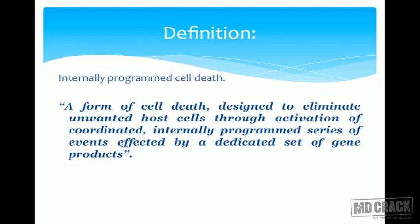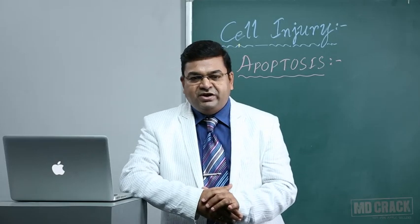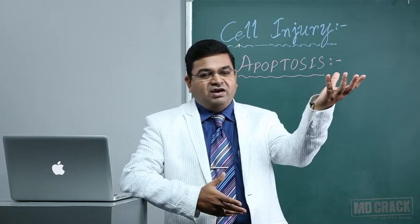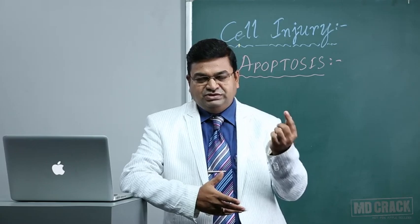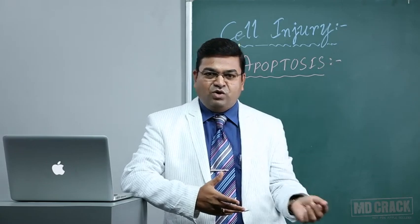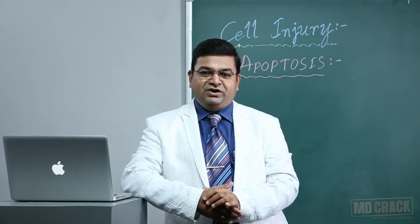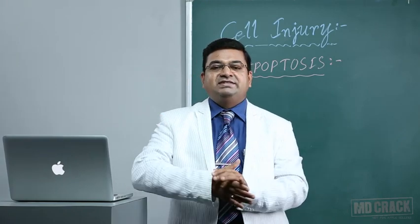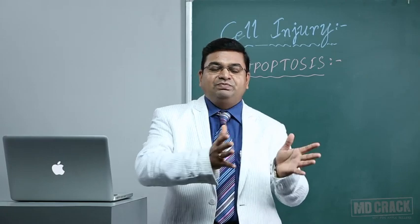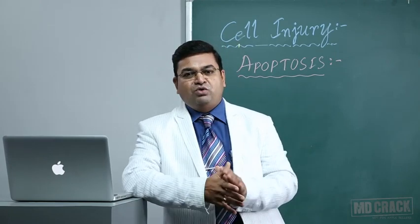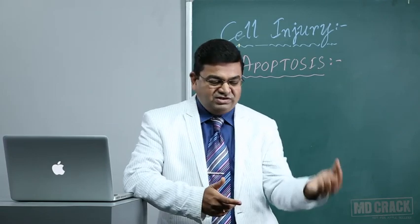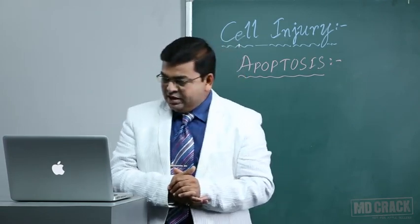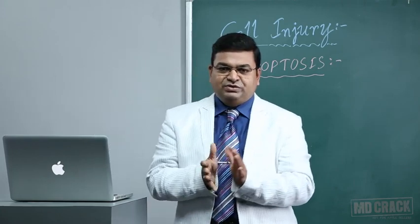The definition of apoptosis is simply a programmed cell death — an internally programmed cell death, so it is actually cell suicide. The word is derived from Greek, meaning the falling of a leaf from a tree. A single leaf falling down is apoptosis, whereas necrosis involves a huge number of cells dying — like the whole tree bunch breaking down.